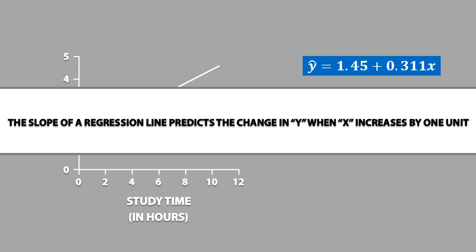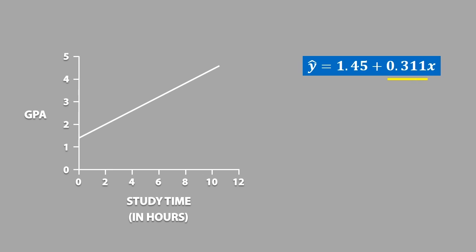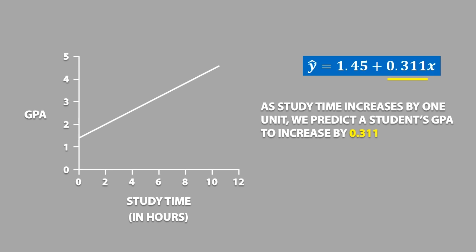The slope of a regression line predicts the change in y when x increases by 1 unit. So in our example, the slope is equal to 0.311. Therefore, we say that as study time increases by 1 hour, we predict a student's GPA to increase by 0.311.